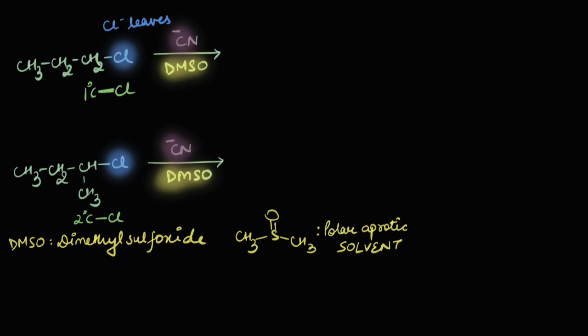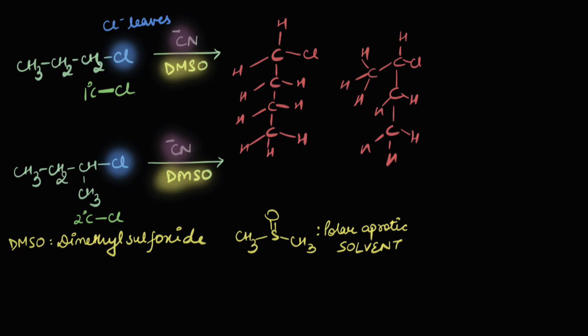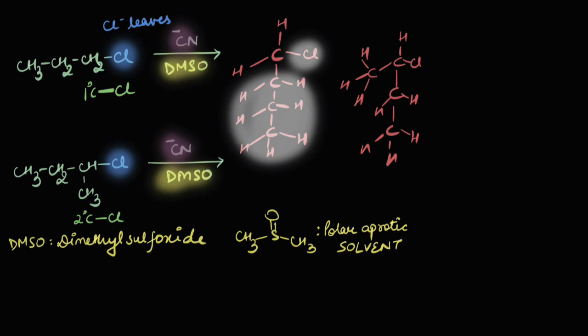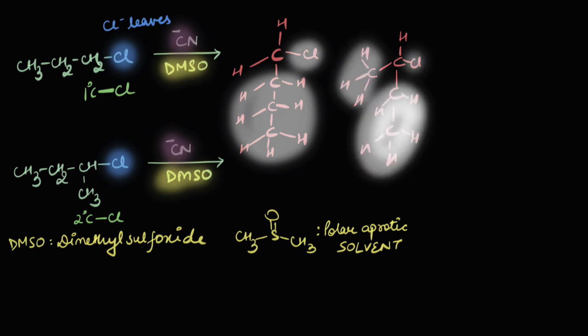Remember, the nucleophile attacks and the leaving group leaves in a single step. These are the two substrates written out fully spread out, and the nucleophile CN⁻ has to attack now. It wouldn't want to attack from the same side where Cl is, because both are electron dense — they will repel. It cannot come from a direction where the bulky group is, because there would be steric hindrance. In the second case, there are two bulky groups, making it even more difficult for the nucleophile to find a way to attack the carbon and displace the leaving group. So there is more steric hindrance in the 2° case.